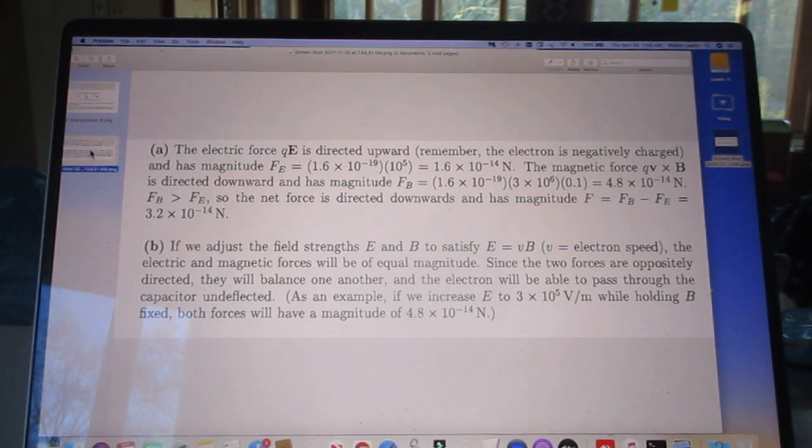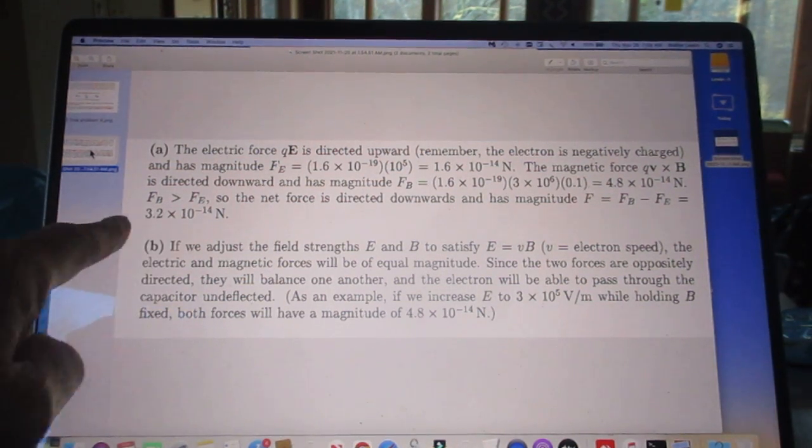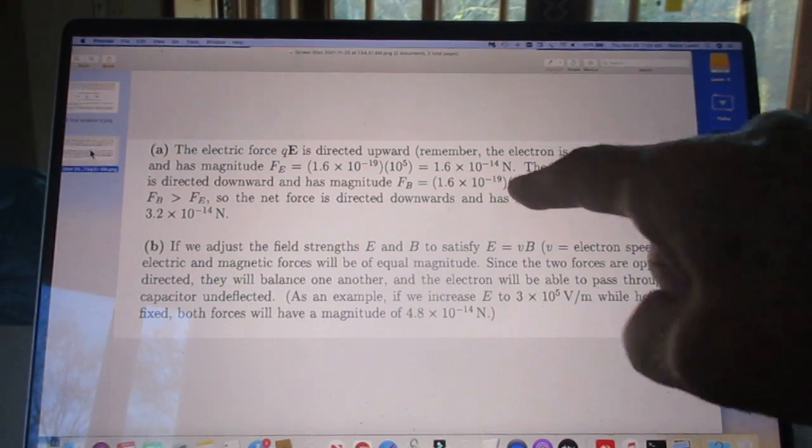That is 1.6 times 10 to the minus 14 newtons. The magnitude, the magnetic force, some people call that the magnetic force, I call that the Lorentz force. It's Q times V cross B, cross product. If you put in the answers, you find that that force is downwards, 3.2 times 10 to the 14 newtons. So this force is larger than that force.